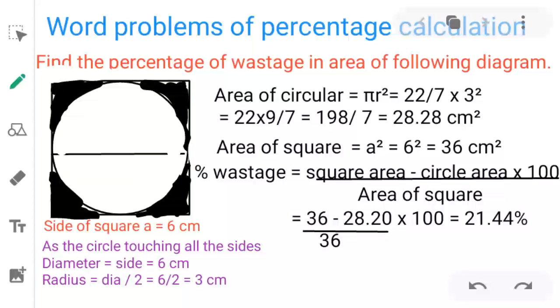Here is a geometrical problem. In this, it is asked to find the percentage of wastage in area of the following diagram. You may observe in the diagram the side of square is 6 cm.